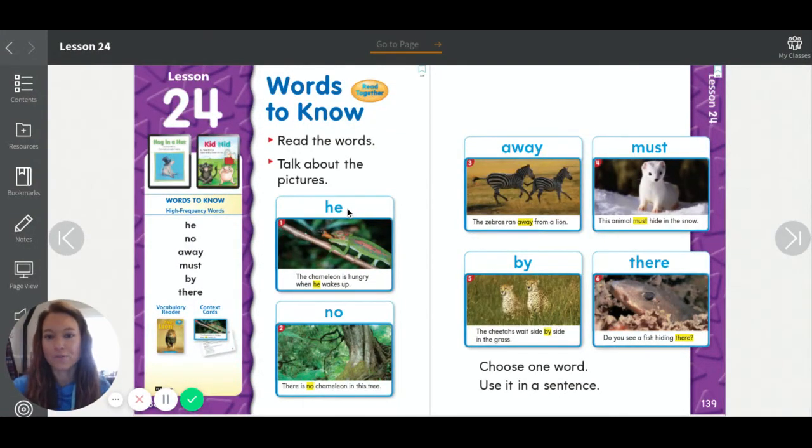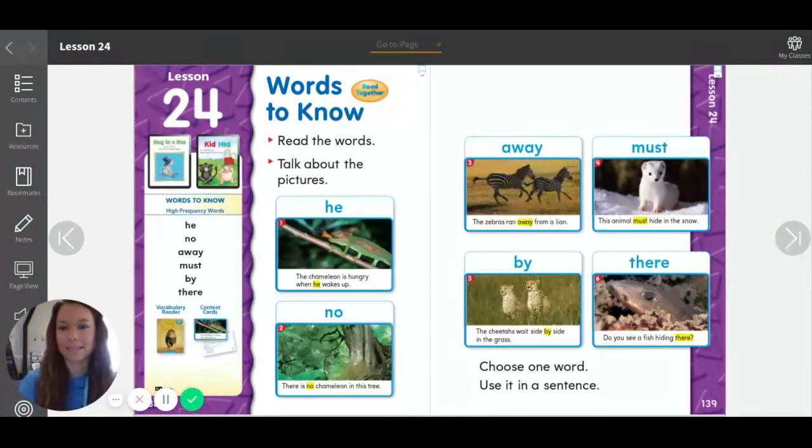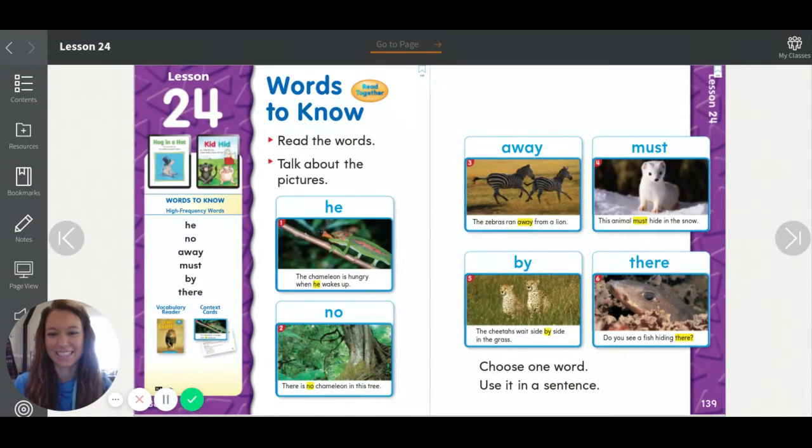This word, repeat after me: he. Let's spell it, H-E. What's that word? Very good. In a sentence we have, the chameleon is hungry when he wakes up. What's this word? And how do you spell it? Very good.